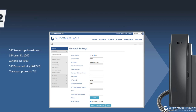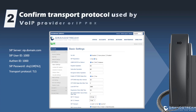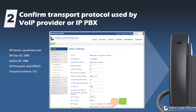Today many VoIP providers require the use of TLS as the transport protocol. By default, Grandstream IP phones use UDP as the transport protocol. If your VoIP provider or hosted PBX requires TLS, make sure you enable TLS on the phone by going to SIP Settings of the account, then go to Basic Settings and change SIP transport from UDP to TLS/TCP.